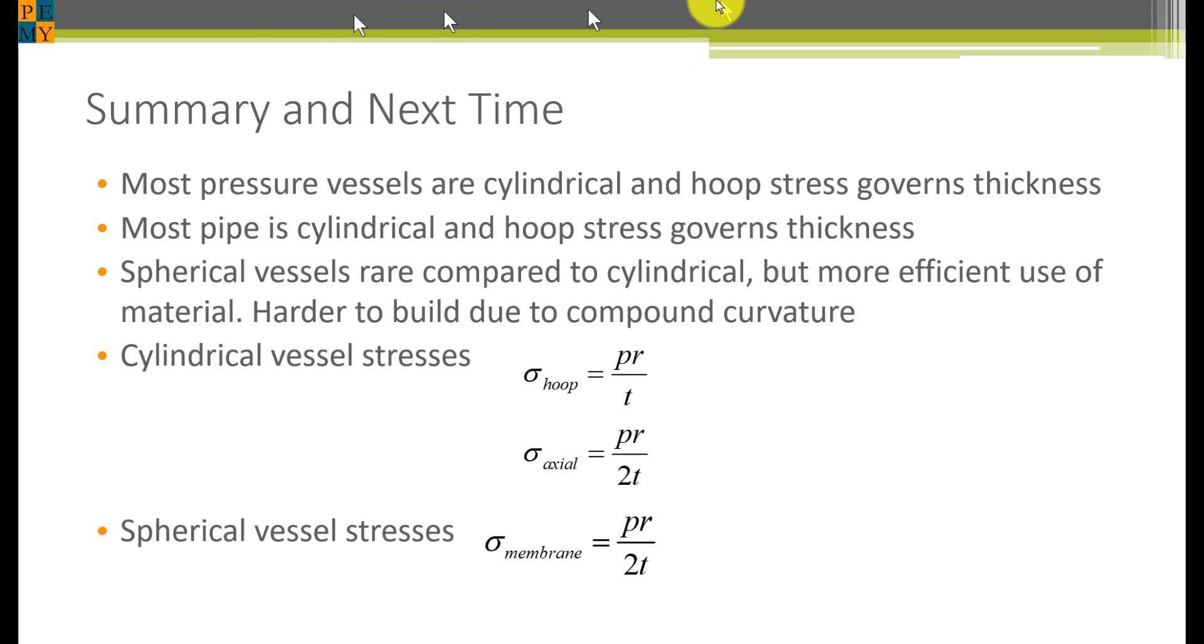So we've learned that most pressure vessels are cylindrical and hoop stress governs thickness. Most pipe is cylindrical and hoop stress also governs thickness. Spherical vessels are rare compared to cylindrical because they're harder to build, but they're more efficient in terms of the amount of steel that must be used to store a given volume. Cylindrical vessel stress formulas are given here: PR over T for the hoop stress and one half of that amount for the axial stress. For spheres, the membrane stress is PR over 2T. It's the same formula as you would get for the axial stress in a cylinder.